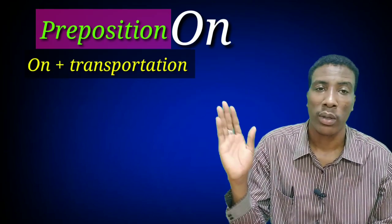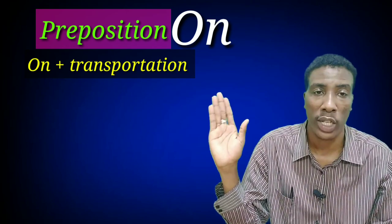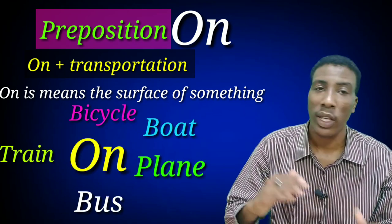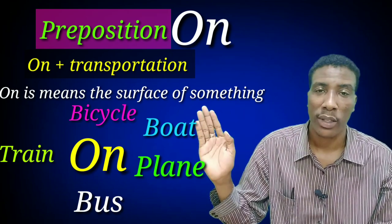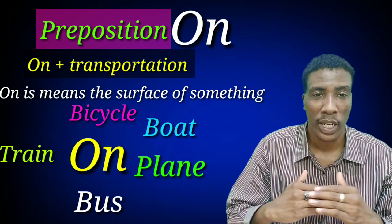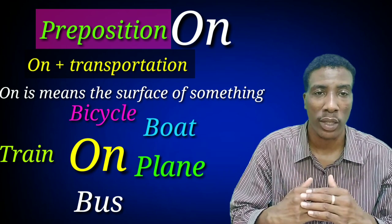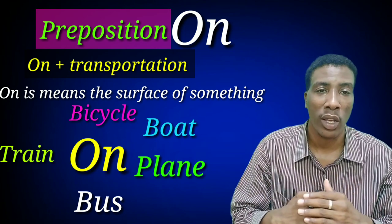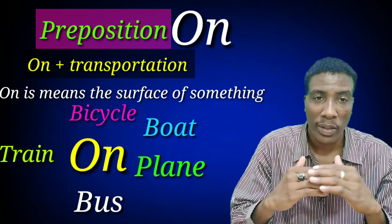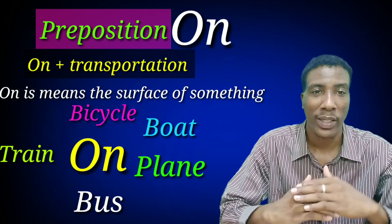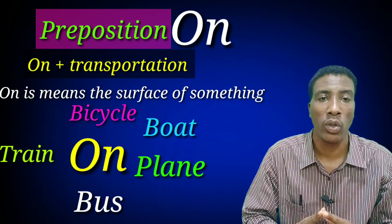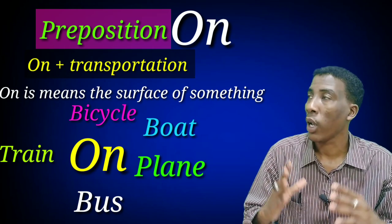Let us go to preposition 'on.' First, 'on' with transportation. 'On' means the surface of something. You can say 'on the train,' 'on the bus,' 'on the plane,' 'on the boat.' We use 'on' because a train is large and many people sit in that area. You can also say 'on the bicycle' because you cannot sit inside a bicycle — you sit on it. In general, 'on' is used for large vehicles.